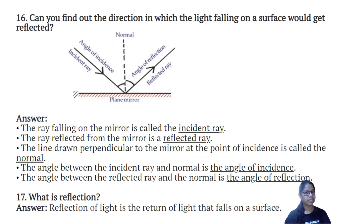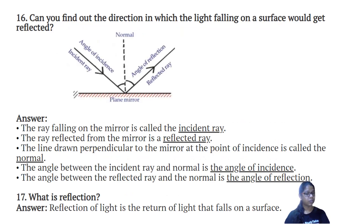Can you find out the direction in which the light falling on a surface would get reflected? The ray falling on the mirror is called the incident ray. The ray reflected from the mirror is called the reflected ray. The line drawn perpendicular to the mirror at the point of incidence is called the normal. The angle between the incident ray and the normal is the angle of incidence. The angle between the reflected ray and the normal is called the angle of reflection.